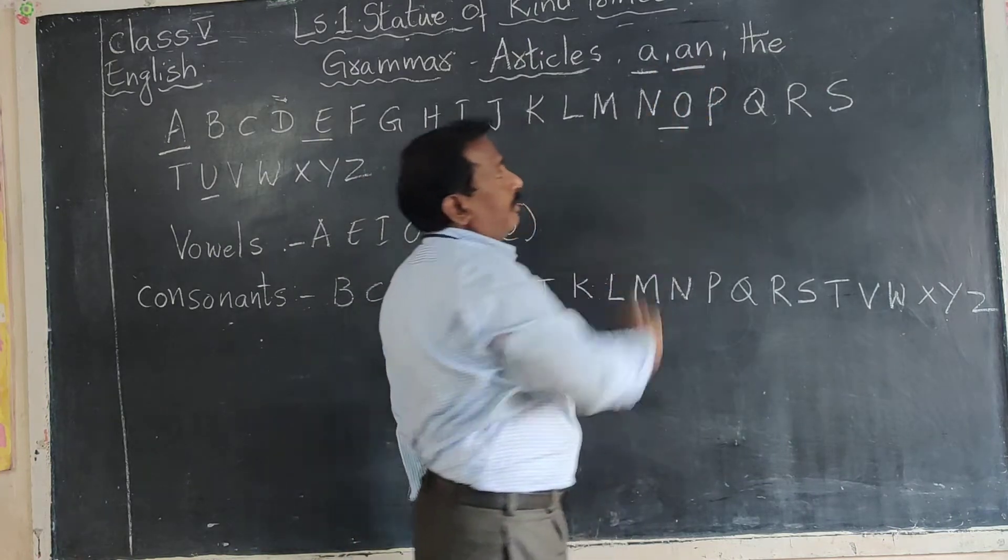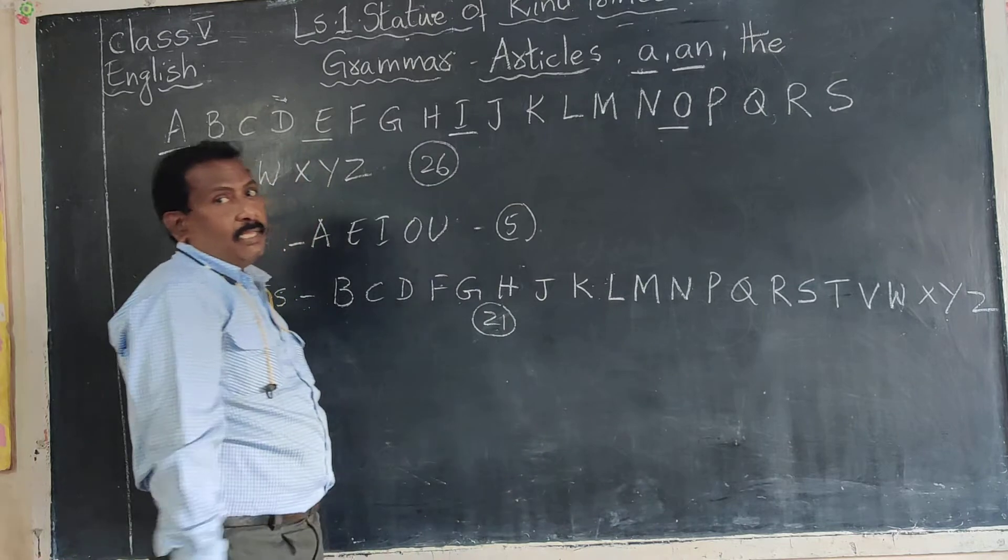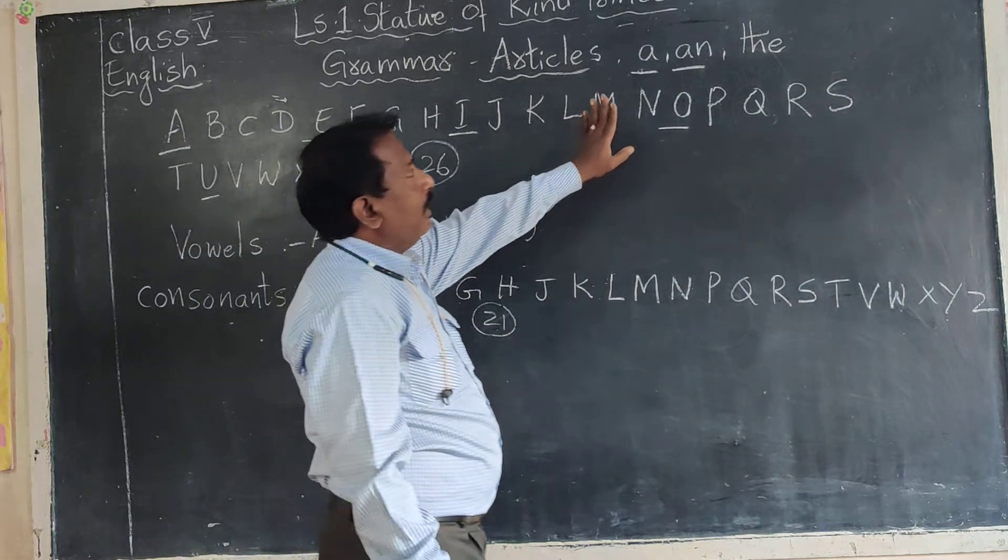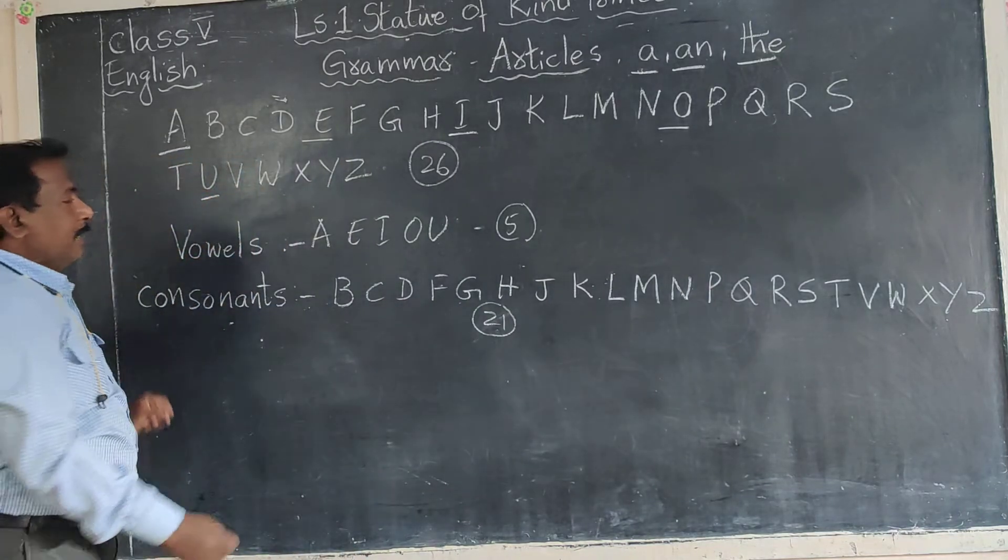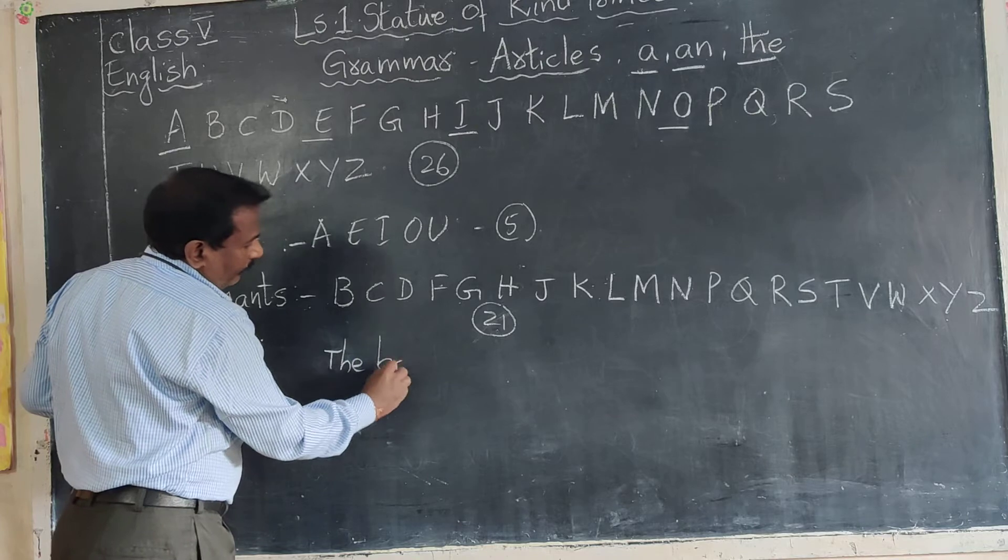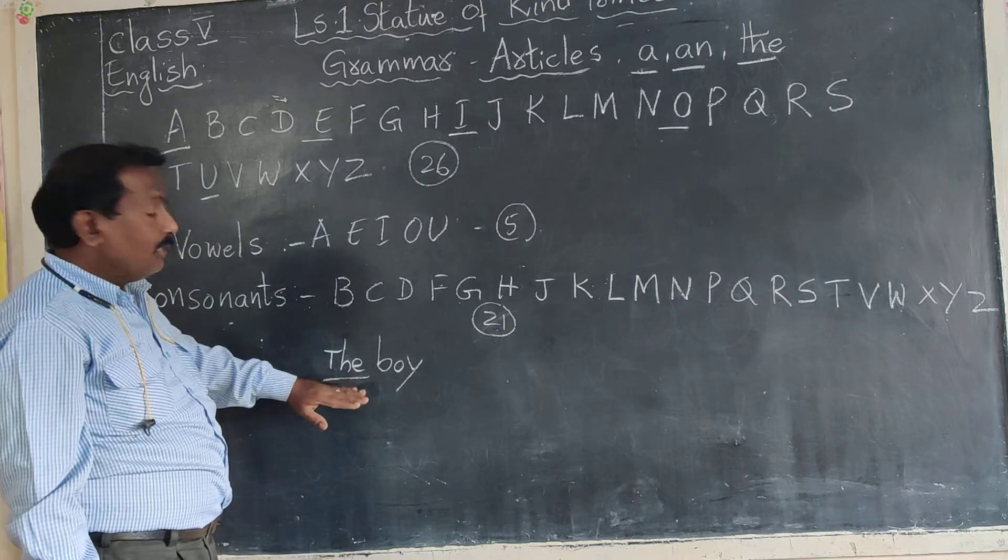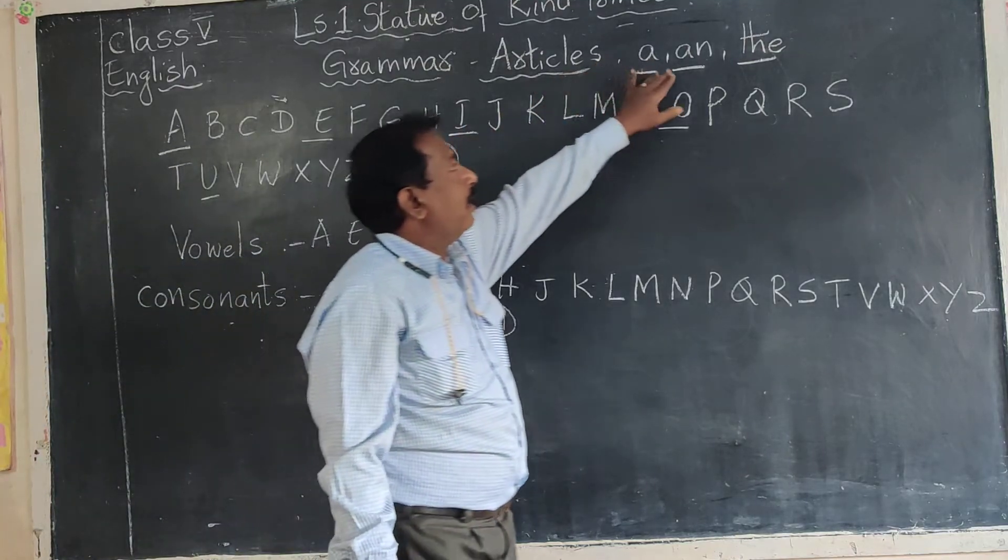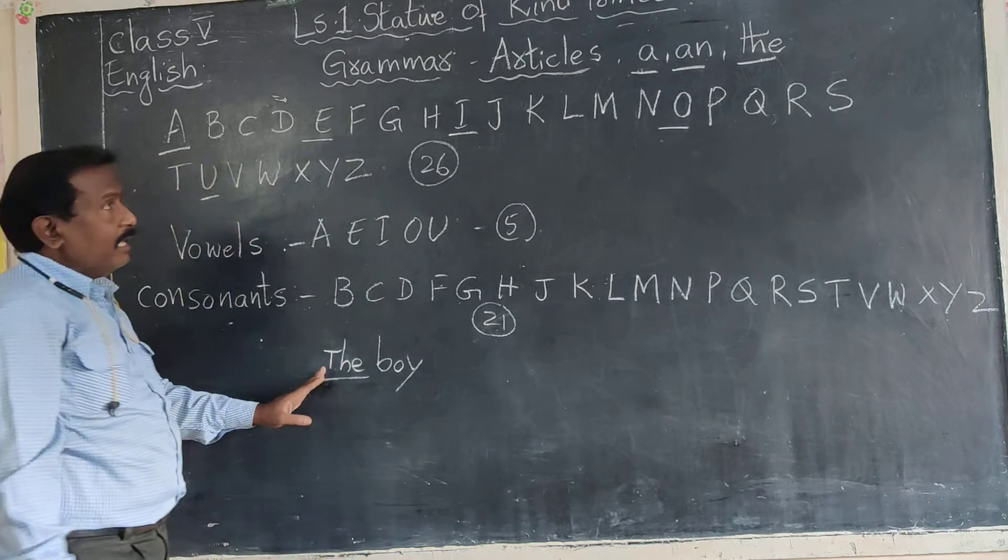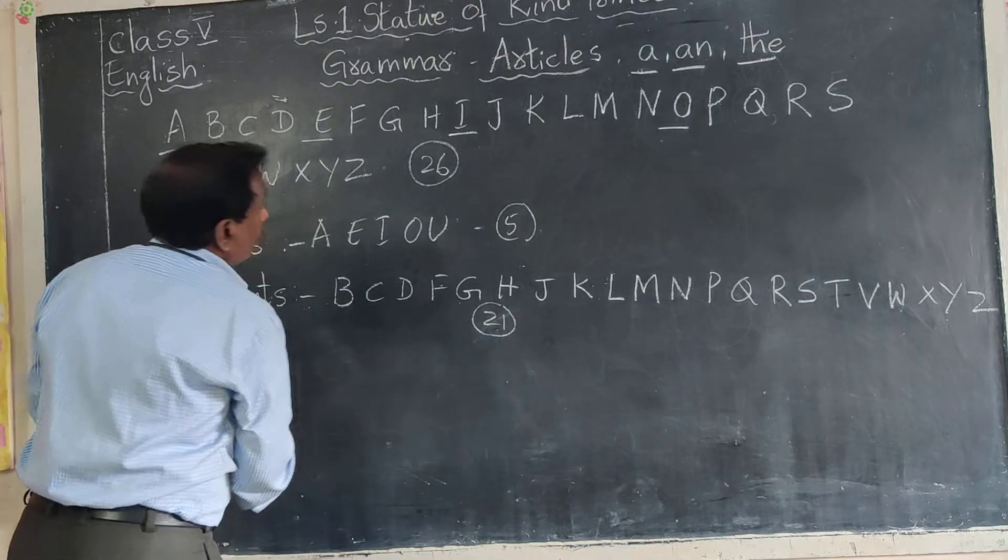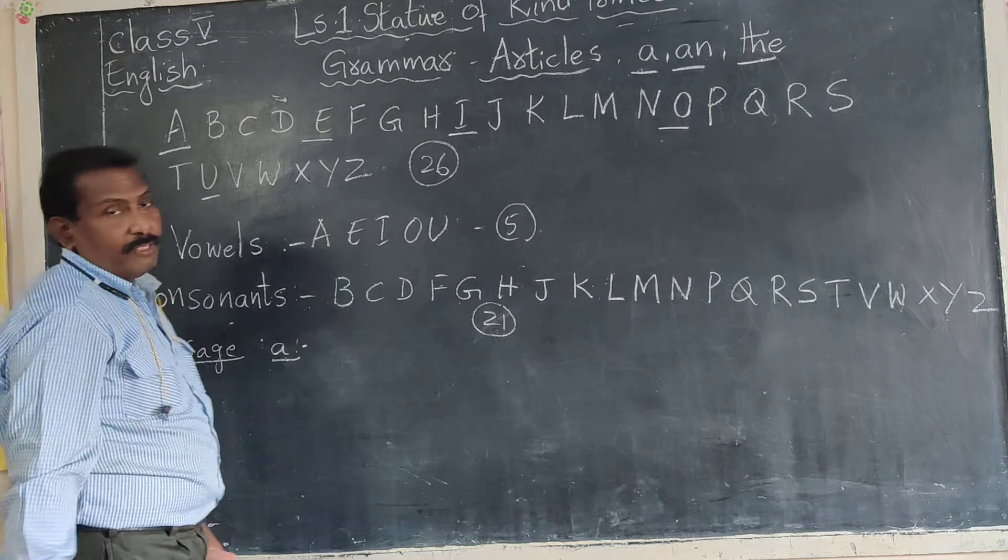Usage of A and An. These are called the indefinite articles, because they do not point to any particular person or thing. When we say the boy, we are talking about a particular boy. So The is called a definite article, but A or An are indefinite articles. Now we see the usage of A or An.